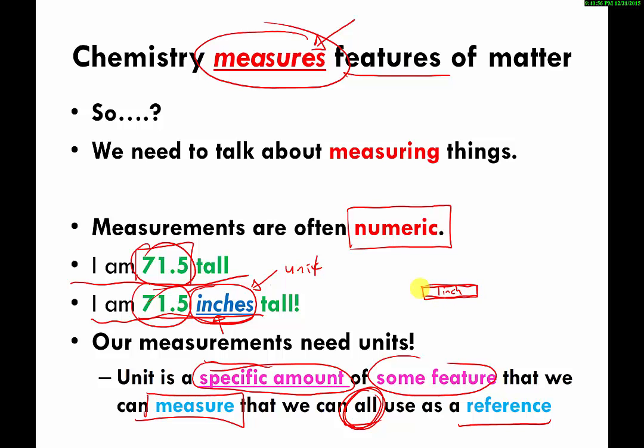So an inch is an example of a unit, and it's a specific amount. It's this much of some feature. In this case, the feature that we're talking about is tallness or length that we can actually measure. And that we can all use. We all come to an agreement because there was a committee that came to an agreement and said, this is what an inch is going to be, and a lot of people should use this for measuring the length of things.